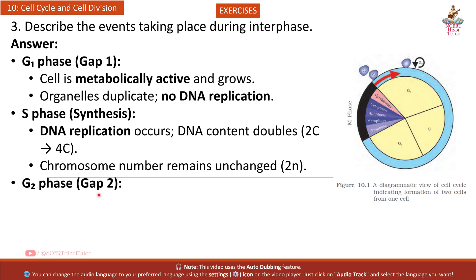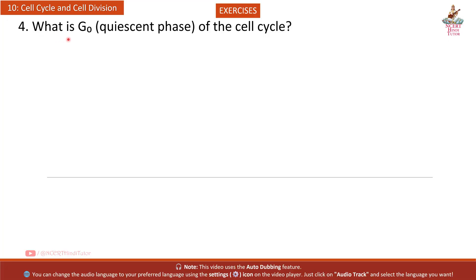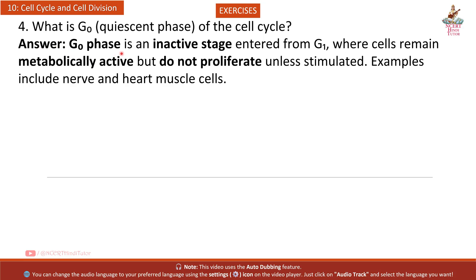G2 phase (Gap 2): Continued cell growth and protein synthesis; preparation for entry into mitosis. Question 4: What is the G0 quiescent phase of the cell cycle? G0 phase is an inactive stage entered from G1 where cells remain metabolically active but do not proliferate unless stimulated. Examples include nerve and heart muscle cells.